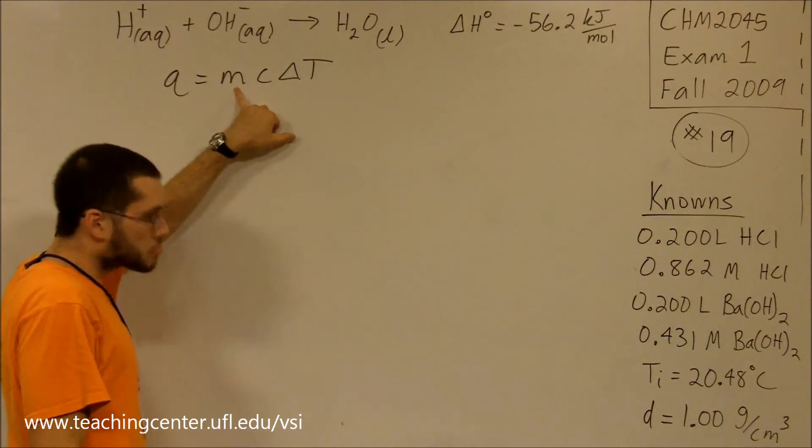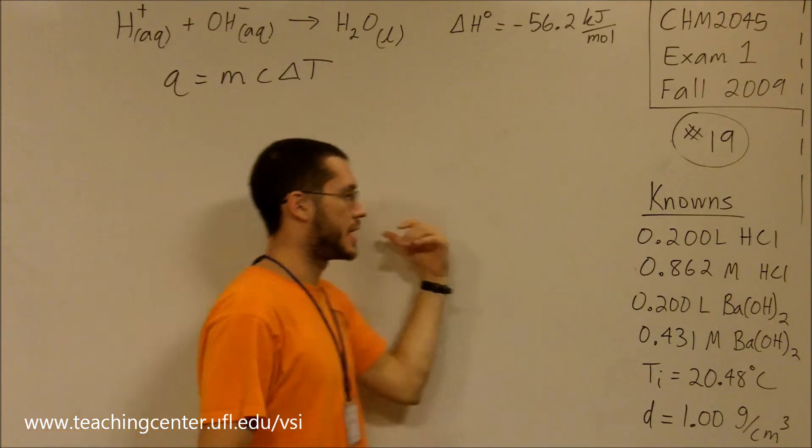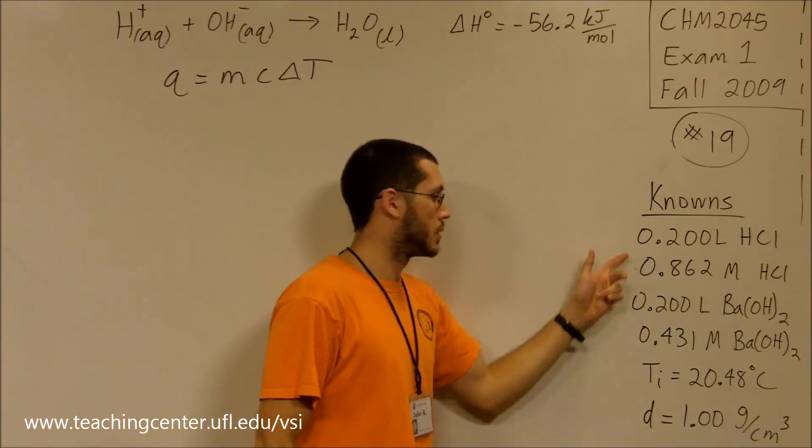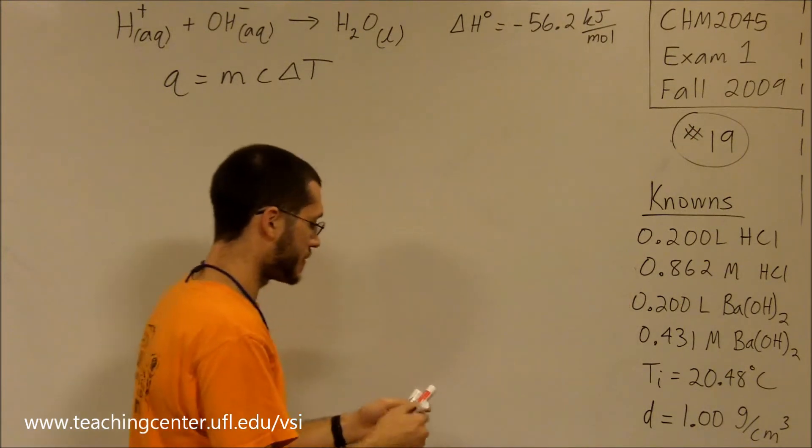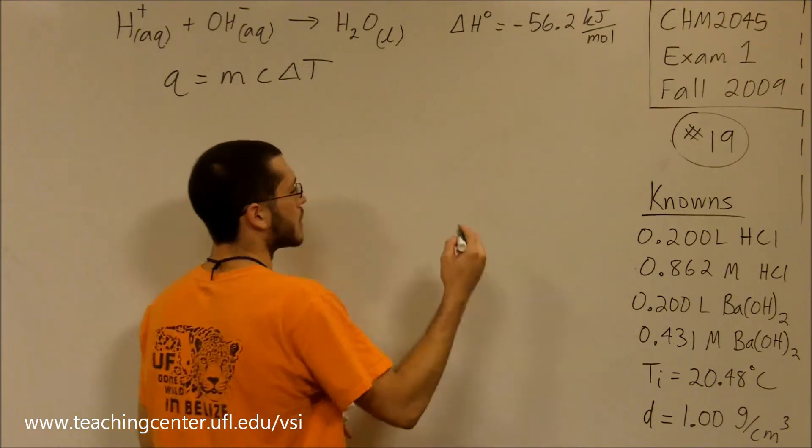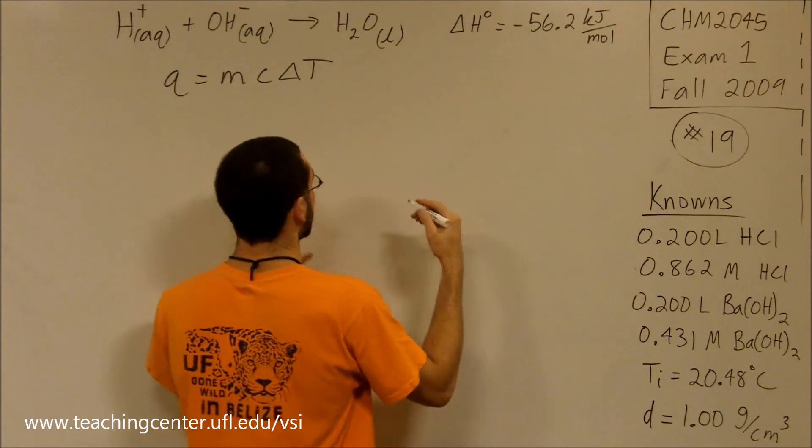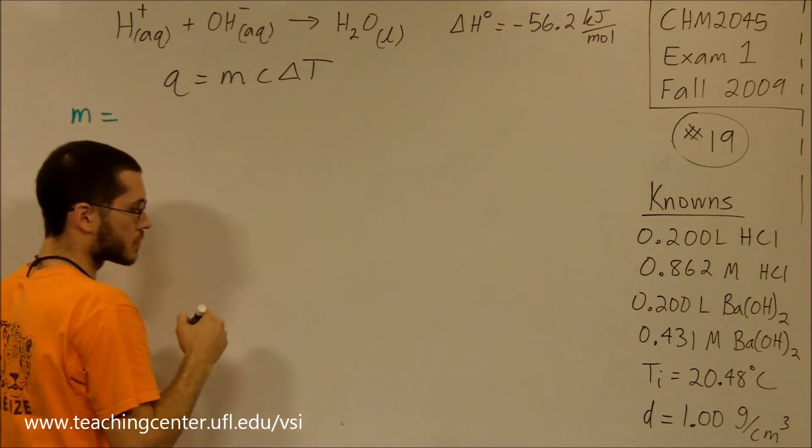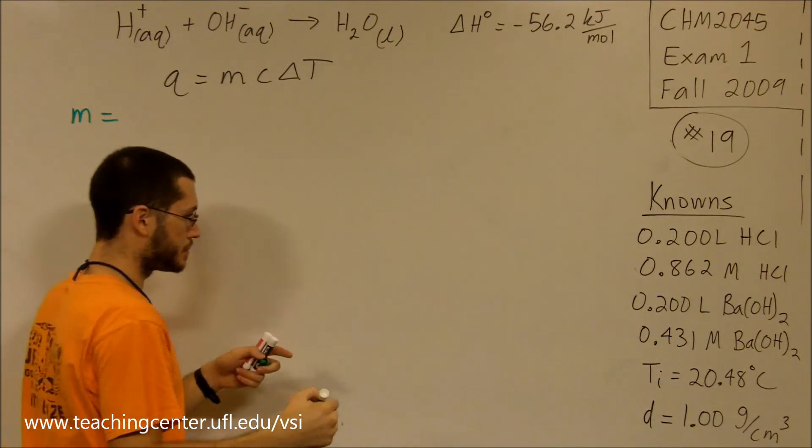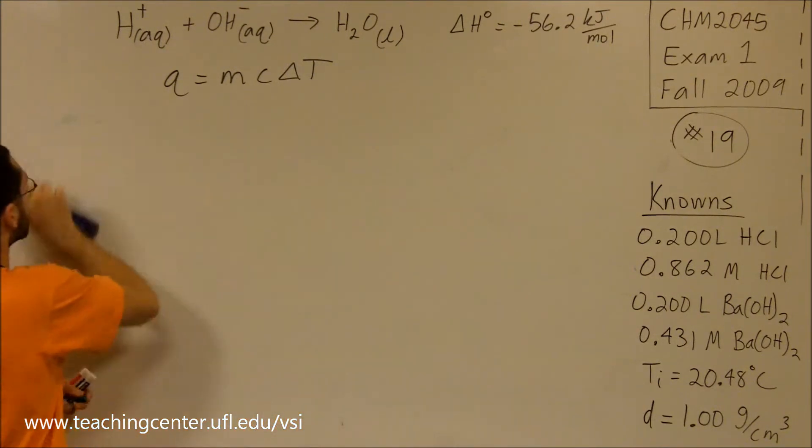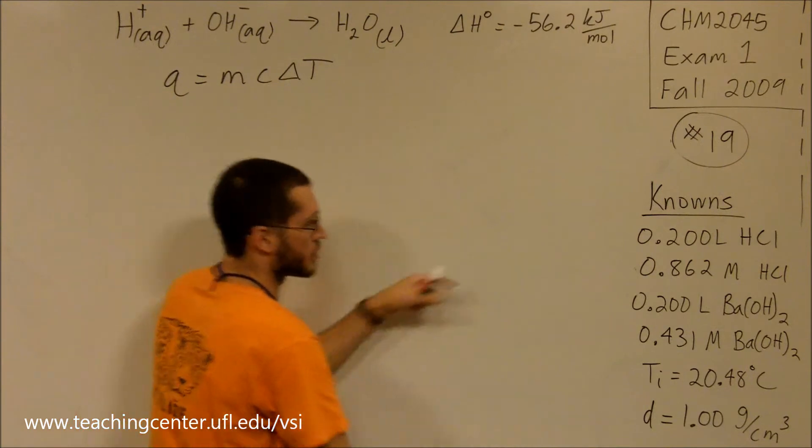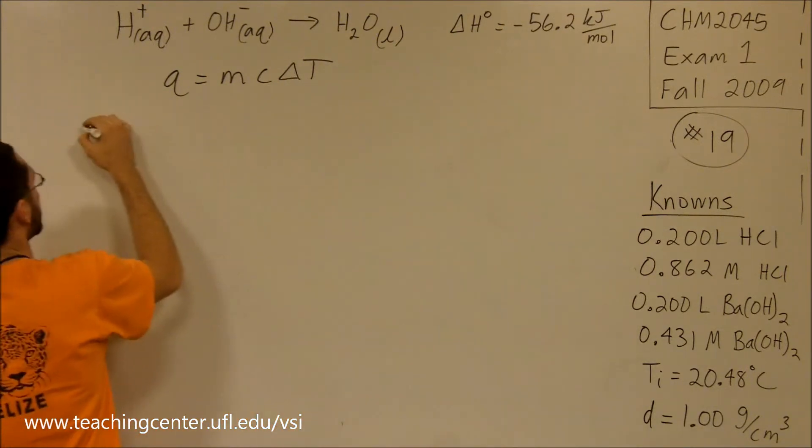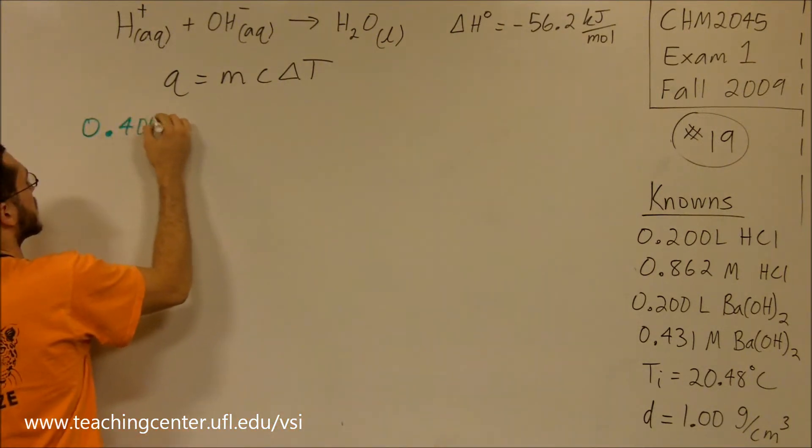Can we find the mass? Sure, we can find the mass of the solution from the two volumes. Let's do that. The mass of the solution equals the density times the volume. Let's start out with the total volume of the solution, 0.400 liters.